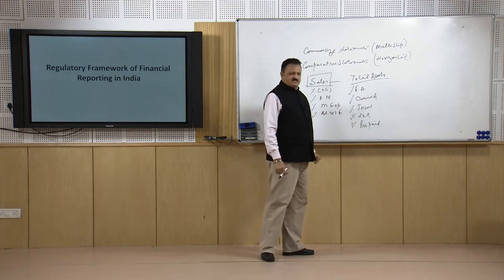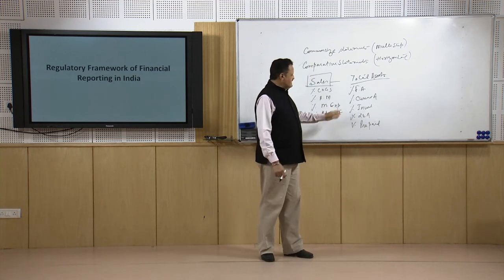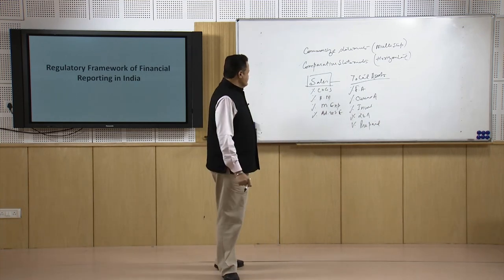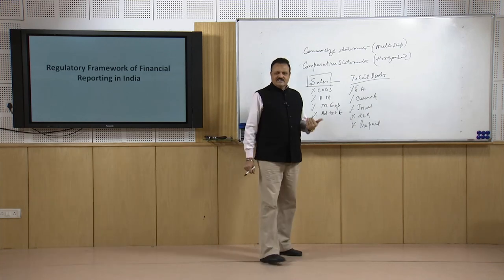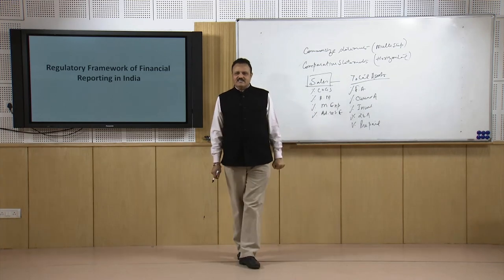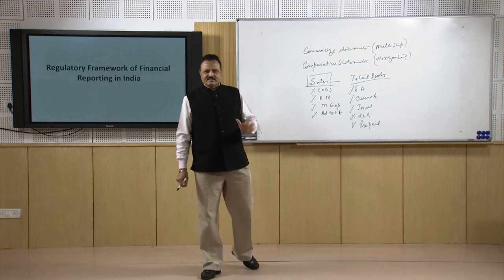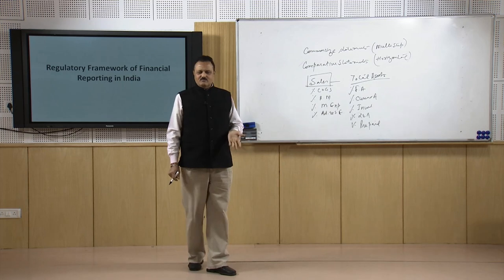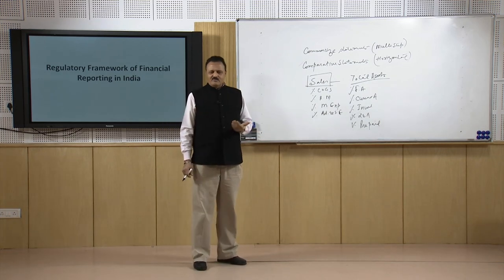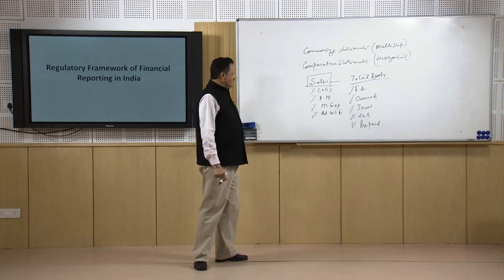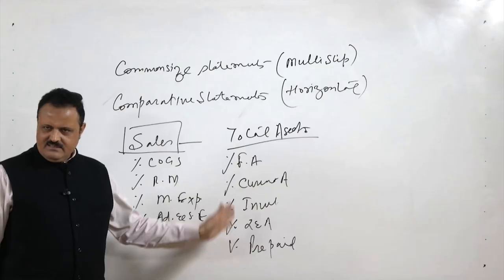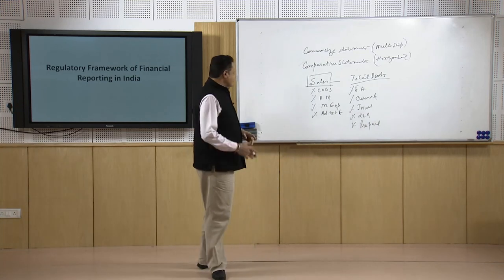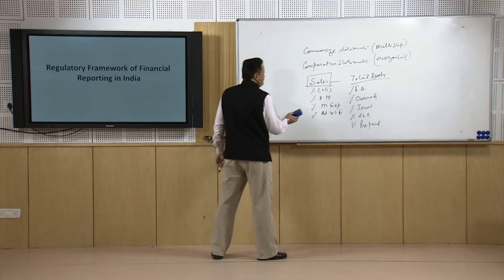Similarly, prepaid expenses should be low whereas loans, advances, and investments can be more. You can also take total liabilities as the common figure and see what percentage is internal funds and what percentage is external funds such as loans, debentures, and current liabilities. This common size statement for the balance sheet is called a vertical statement, and it is one way analysis of the financial position statement can be done.